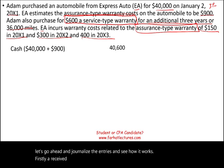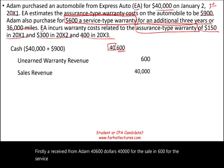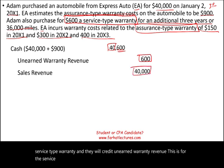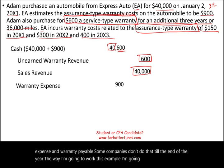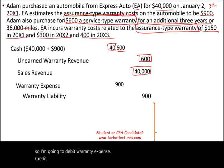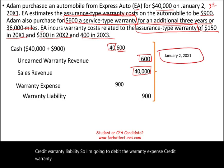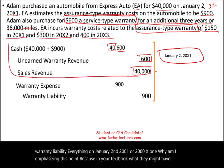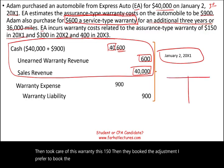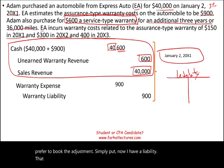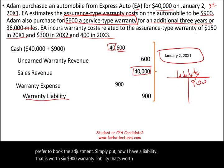First, EA received from Adam $40,600 — $40,000 for the sale and $600 for the service type warranty. They debit cash $40,600, credit sales $40,000, and credit unearned warranty revenue $600 for the service type warranty. On the same date, we book warranty expense and warranty liability: debit warranty expense $900, credit warranty liability $900. Now we have a warranty liability worth $900 and an unearned warranty revenue liability worth $600.